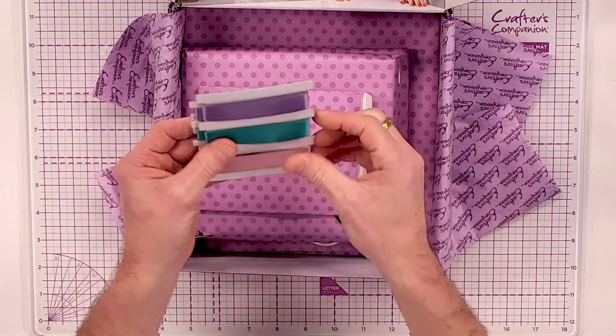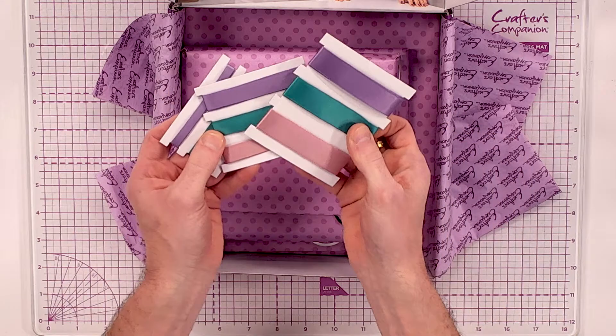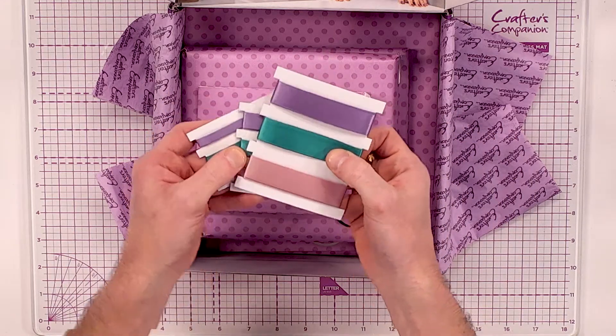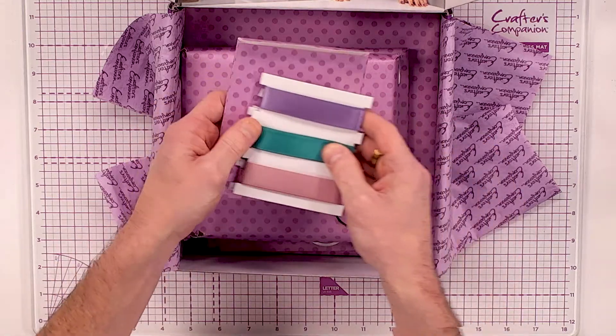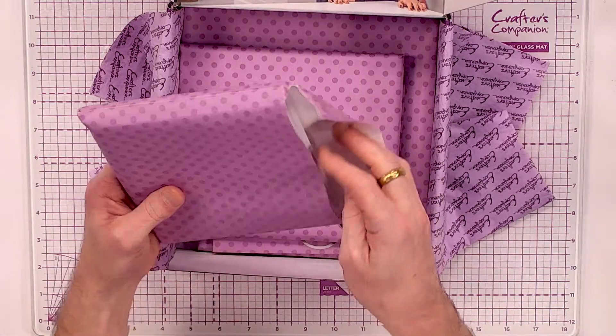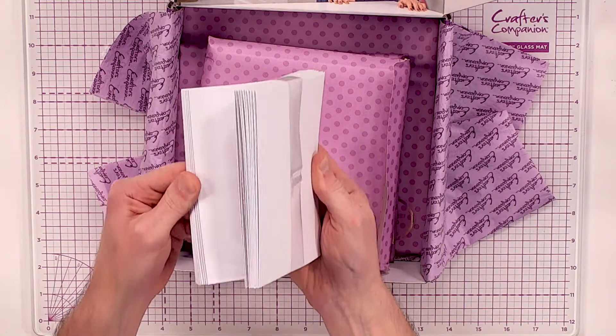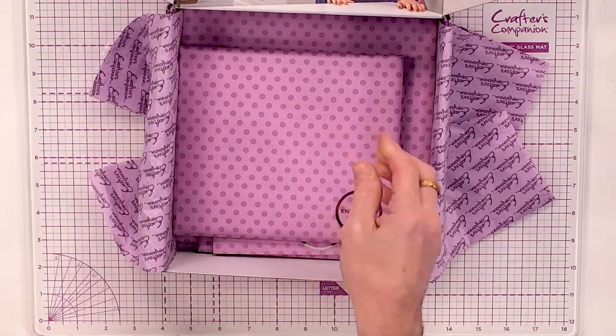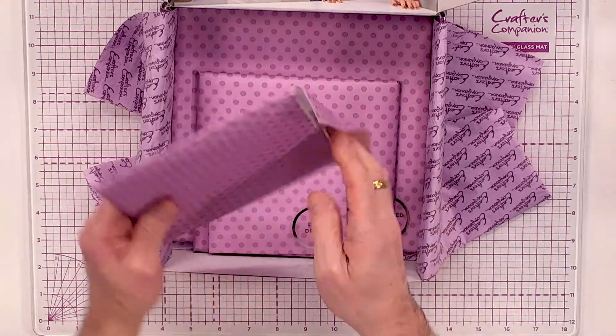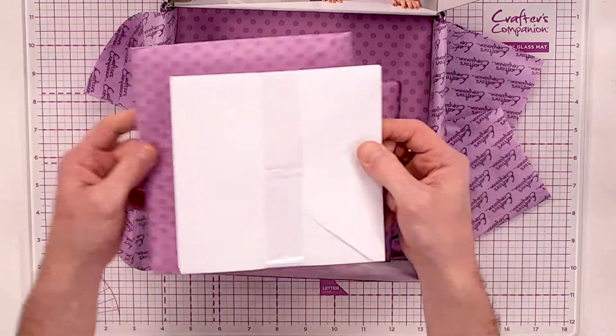What we've also got is our ribbons. We have got nine reels of these, three colors. You've got six millimeters, 12 millimeters, and 19 millimeters. Then this is where your 18 cards come into play. You have got 18 six by six card blanks. Now when it comes to the card blanks, you need your envelopes, don't you? So you have got 18 of them as well.